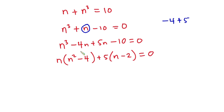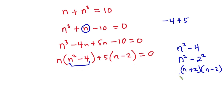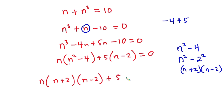Now n squared minus 4 is the same as n squared minus 2 squared, which is a difference of two squares. It can be expressed as n plus 2 times n minus 2. So in place of n squared minus 4 we put this whole thing: n times n plus 2 times n minus 2, then plus 5 times n minus 2, and this is equal to 0.